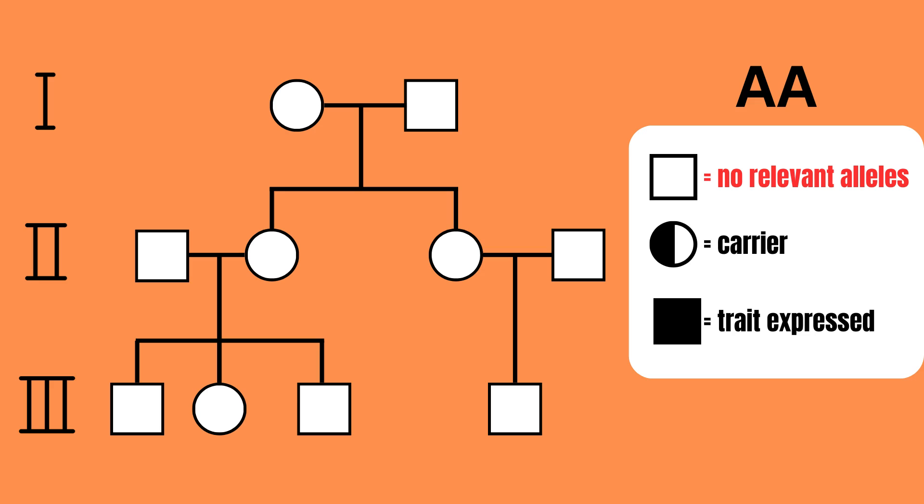Half-shaded shapes represent individuals that are heterozygous, or carriers, meaning they have one dominant allele and one recessive allele. Fully shaded shapes represent homozygous recessive individuals, meaning that they have two recessive alleles.